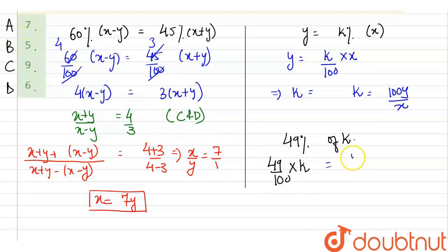Now, as we know, what is the value of k? So, k's value is basically 49 by 100 into 100 y upon x. Now, here we have found the value of x, which came from here. So, we'll substitute that value here.